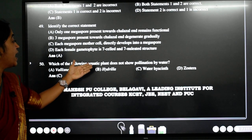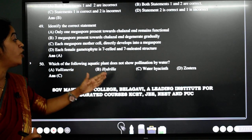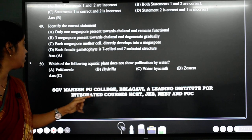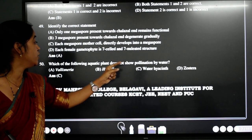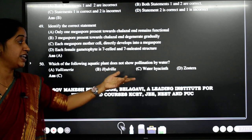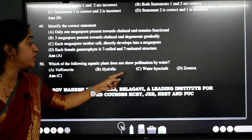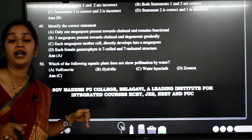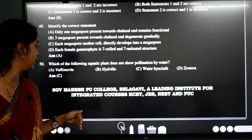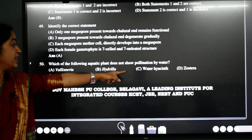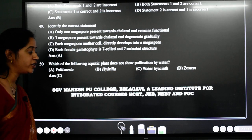Next one. Which of the following aquatic plant does not show pollination by water? See student. Vallisneria will be pollinating on the surface of the water. Hydrilla and Zostera, even they are aquatic. But water hyacinth, even though it is aquatic plant, but it will not undergo hydrophily. It will undergo entomophily. So answer here is C. That is water hyacinth.